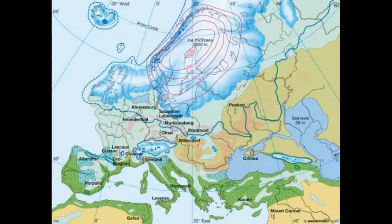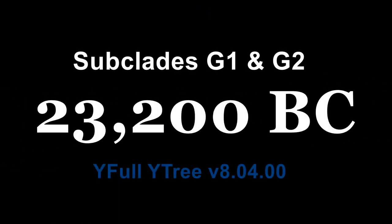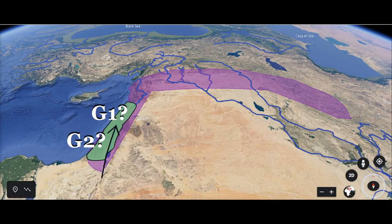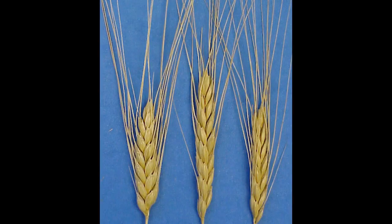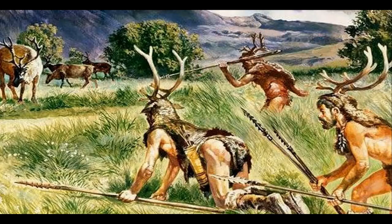Around 24,000 BC, the climate in the Levant temporarily grew colder and drier. Haplogroups G1 and G2 were founded about 23,000 BC. G1 may have been the northern branch of the range, while G2 may have led to the south. These groups were semi-sedentary foragers who knew how to take advantage of wild grains such as emmer wheat and barley that grew in the area, as well as to hunt wild game successfully.